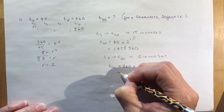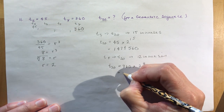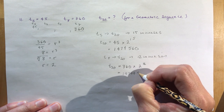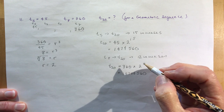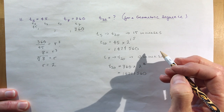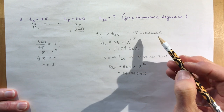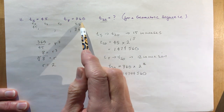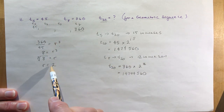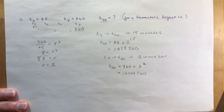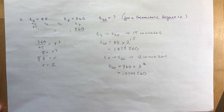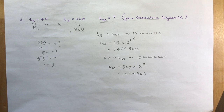Geometric sequences involve a type of exponential growth or decay. Recognize the common ratio between terms, and use the formula for finding r between non-consecutive terms to work out values further down the sequence. Hope that's helpful — if you liked it give it a thumbs up, and next we'll be doing series. Bye for now.